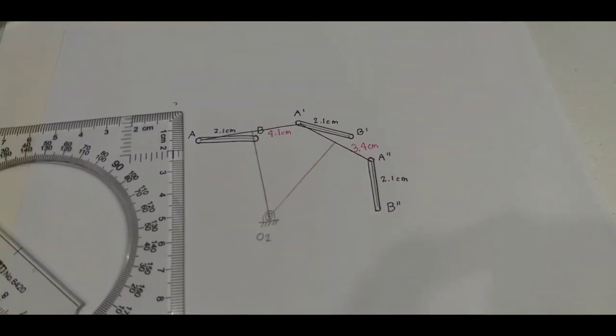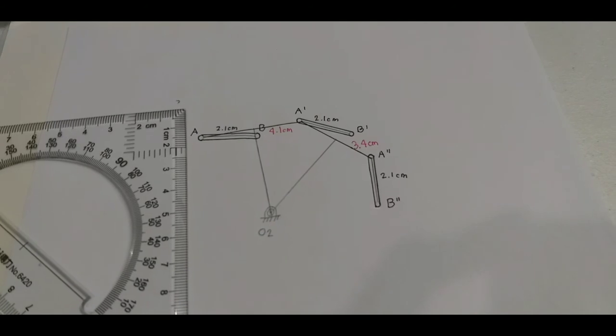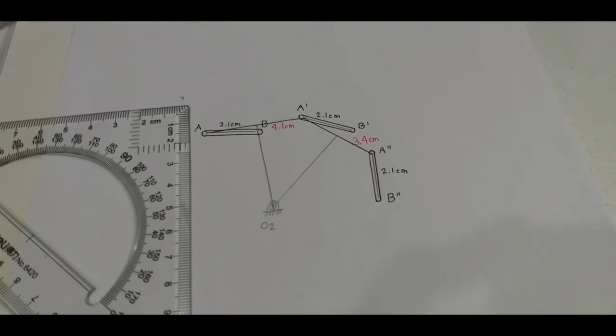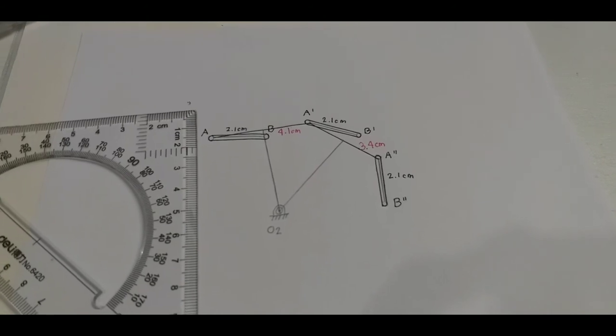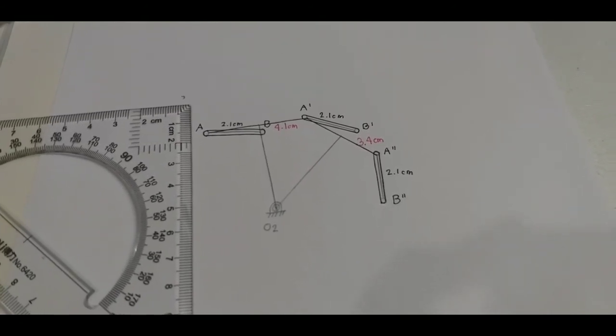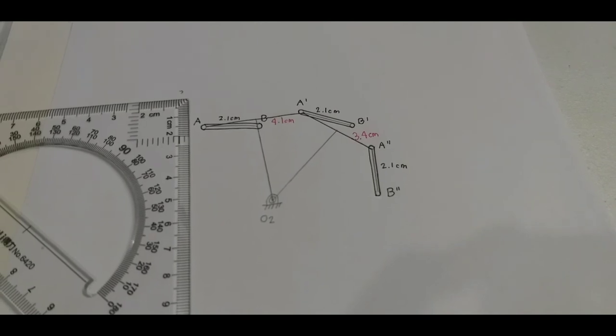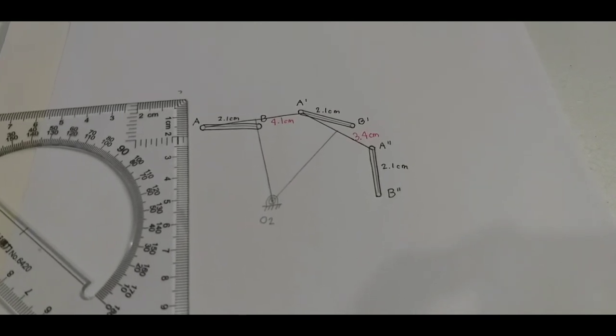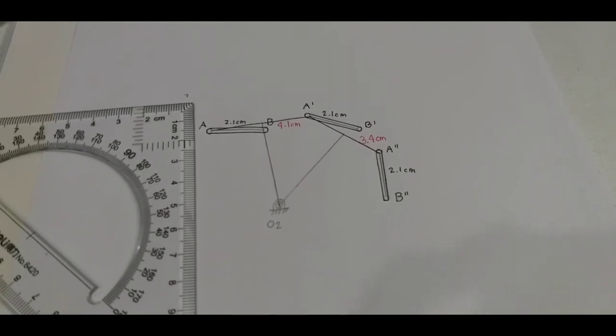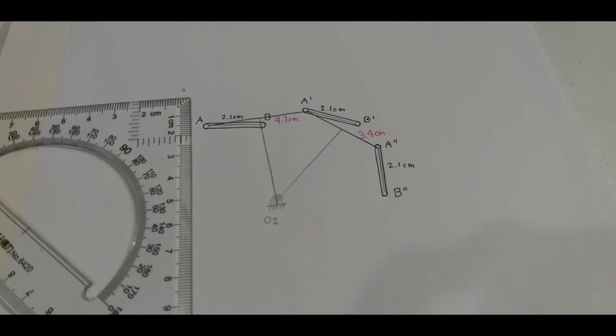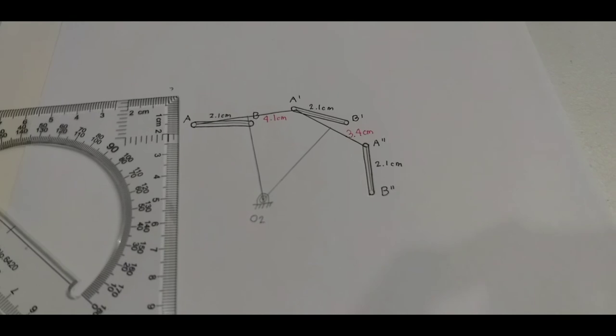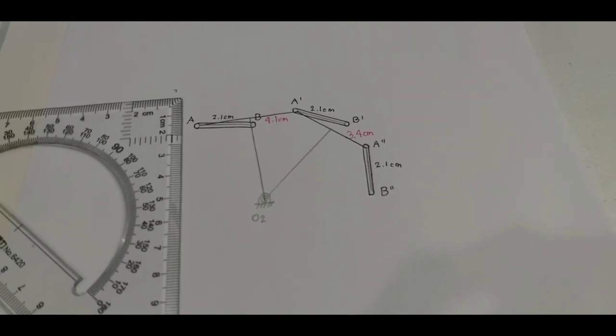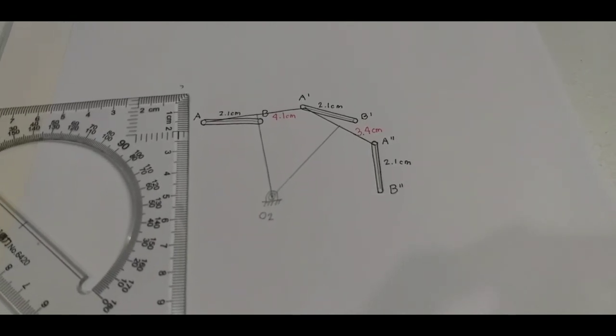So now that we've found the intersection of the two perpendicular bisector of these two lines, we shall do the same thing to find fixed hinge O4. We shall do the same process of connecting B from the first position to B' from the second position. Then we shall connect B' from the second position to B'' from the third position.